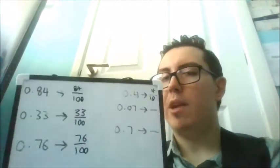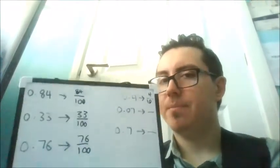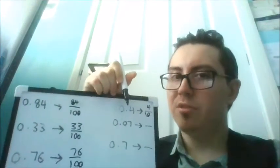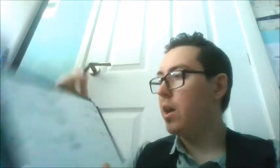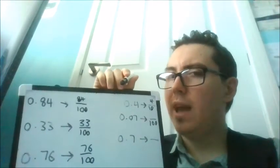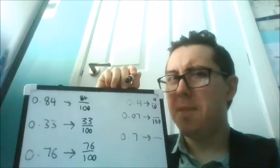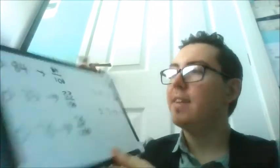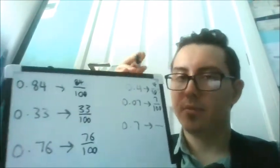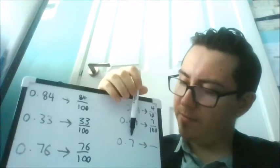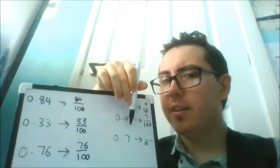Next one. 0.07. This one might be a little bit tricky, but don't worry. You can do it. So we have a tenths column, even if there's nothing in it, we still have it. And we have the hundredths column. So it's going to be over 100. How many over 100 is it going to be? We have seven. The only number there is seven. So it's going to be seven over 100. And here, 0.7. So what column are we in? Tenths. No hundreds. So it's over 10. How many over 10 is it going to be? We've got seven. It's going to be seven over 10. That's it.